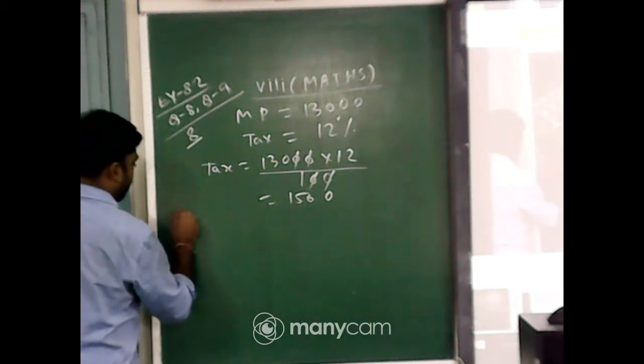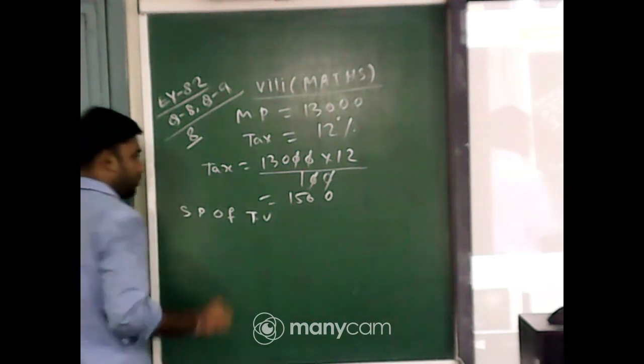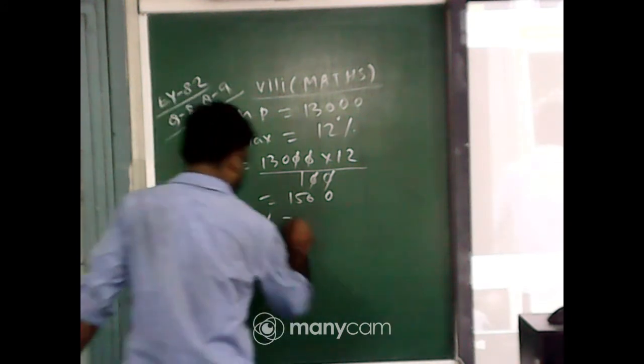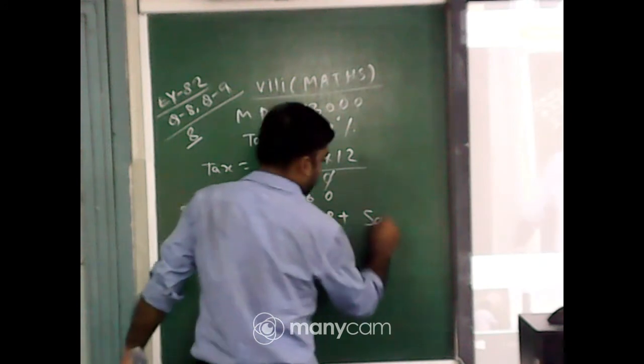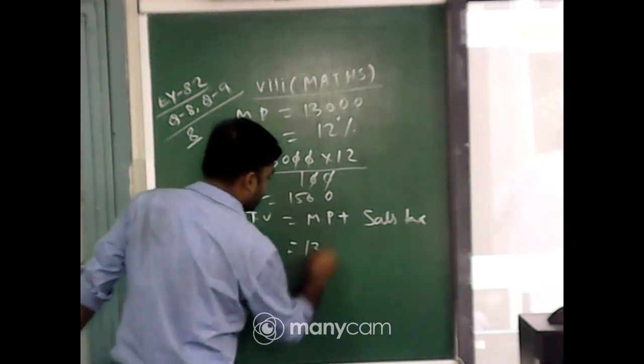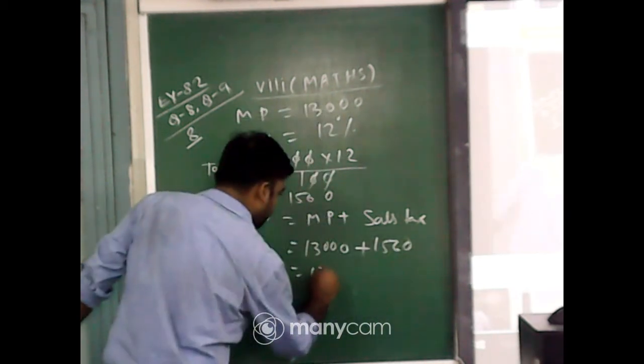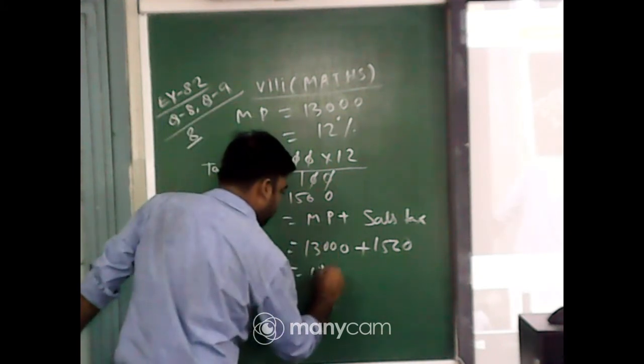Now that amount we have to pay to the shopkeeper for the TV, that is the selling price of the TV. SP of TV equals mark price plus sales tax. So what is the mark price? That is rupees 13,000, and what is the sales tax? 1,560. So 13,000 plus 1,560 equals 14,560.